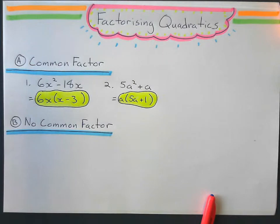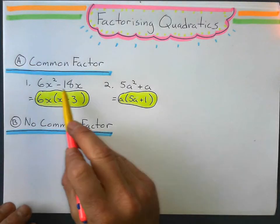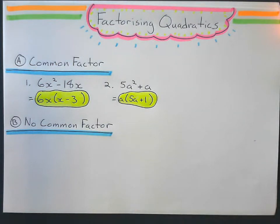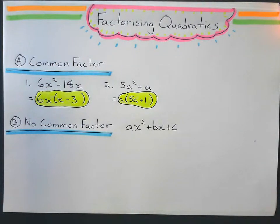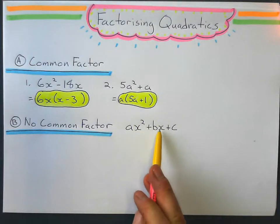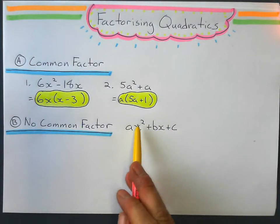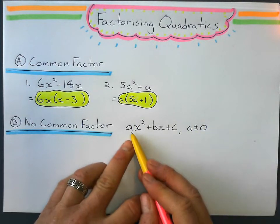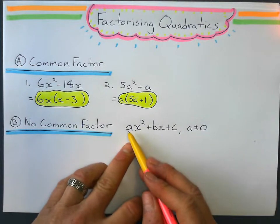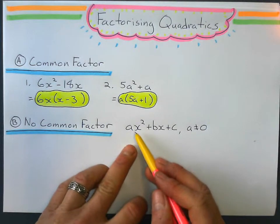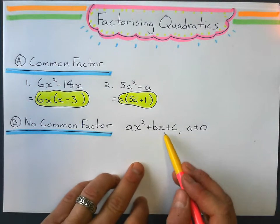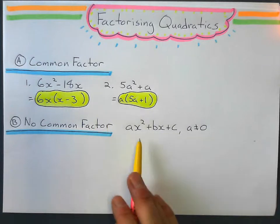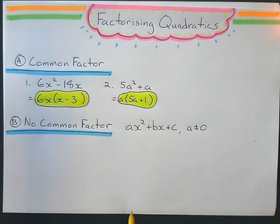The next ones we'll look at is when there is no common factor, and they're going to be written in a usual form. The form they're going to be written in most of the time is ax squared plus bx plus c. Something x squared, where a can't be 0, because if that coefficient was 0, it wouldn't be a quadratic anymore. But b and c can be 0. These examples here are when we don't have a common factor.